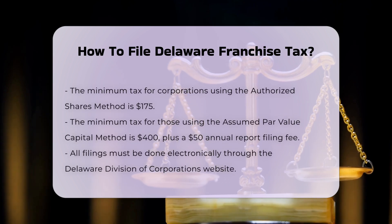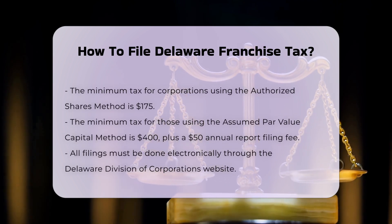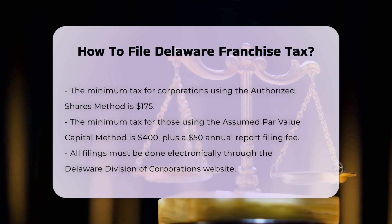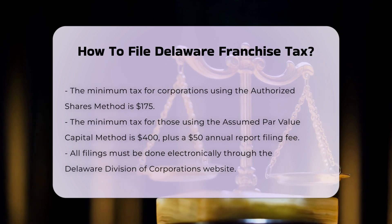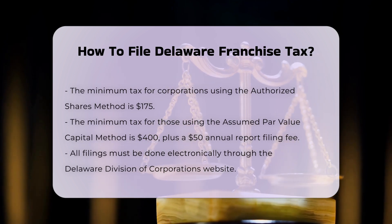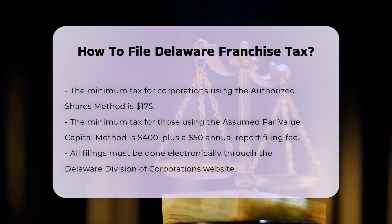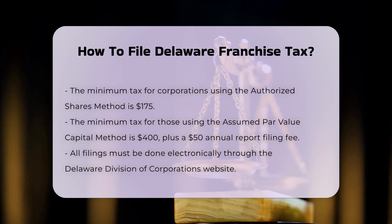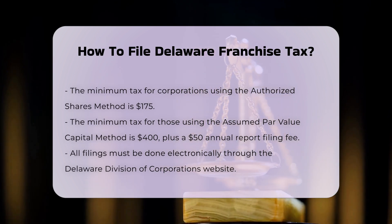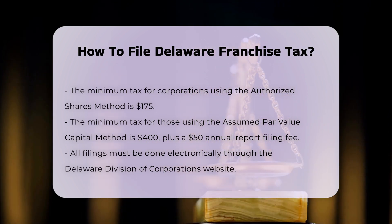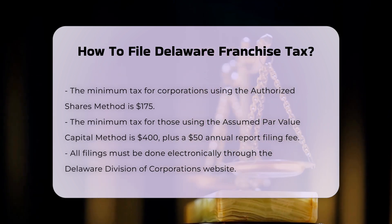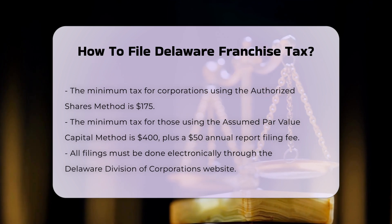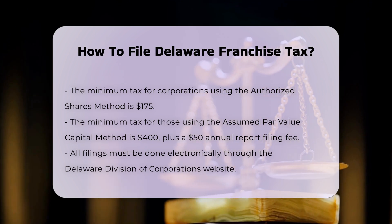Filing Process. All corporations must file their annual report and franchise tax electronically through the Delaware Division of Corporations website. You will need your business entity file number, Federal Employer ID number (EIN), the corporation's physical address, and the names and addresses of officers and directors.